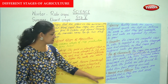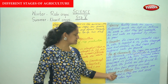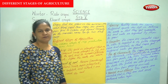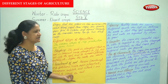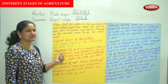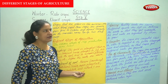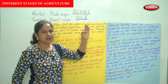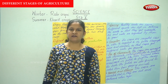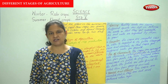To summarize, the different stages of agriculture are: first, ploughing; second, enrichment of soil; third, sowing; fourth, irrigation; fifth, use of chemicals; and sixth, harvest and storage. These are the different stages of agriculture.